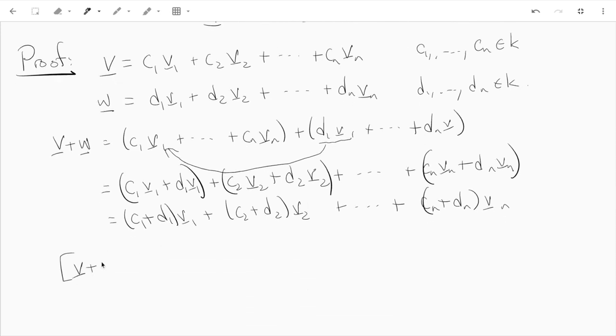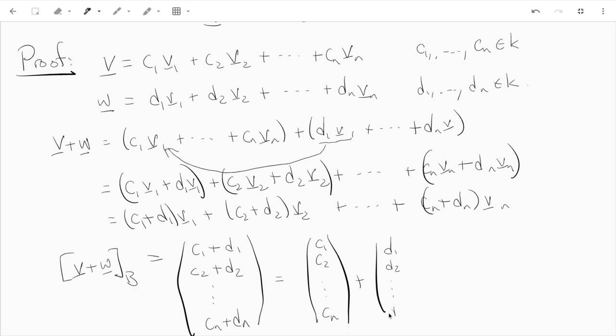So what does that mean? Well, that means the coordinate vector of v plus w is a vector whose first entry is c1 + d1, second entry is c2 + d2, and cn + dn is the last entry. Of course, this is just the sum of two vectors - the first vector is just the c's, second vector is the d's. And well, that just means the first vector is the coordinates of v, the second vector is the coordinates of w, and that's the end. So we've shown that the coordinate of the sum of the vectors is the sum of the coordinates.